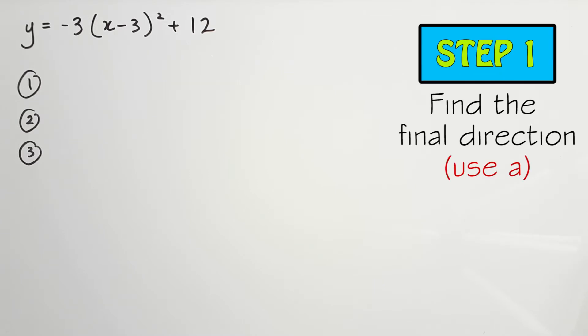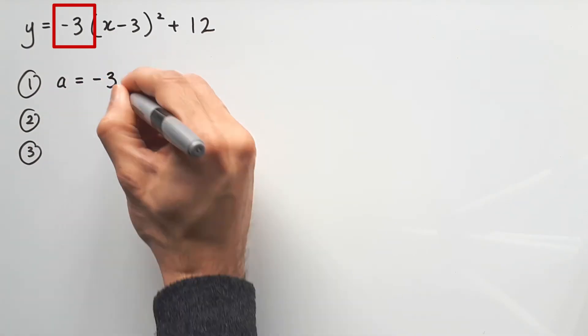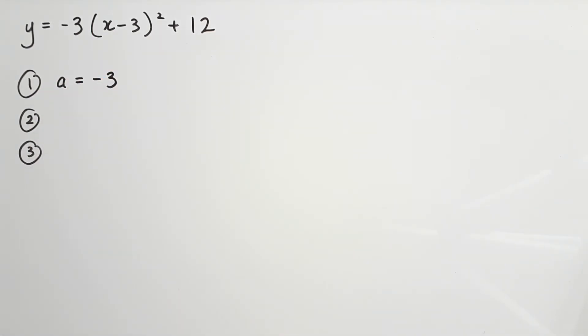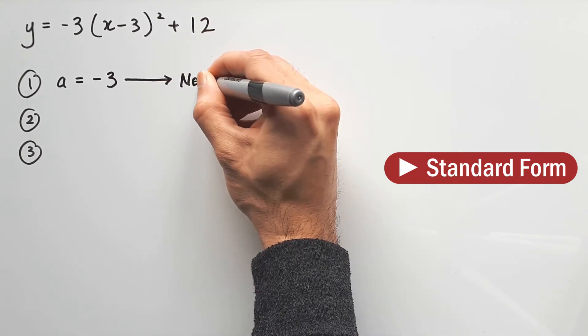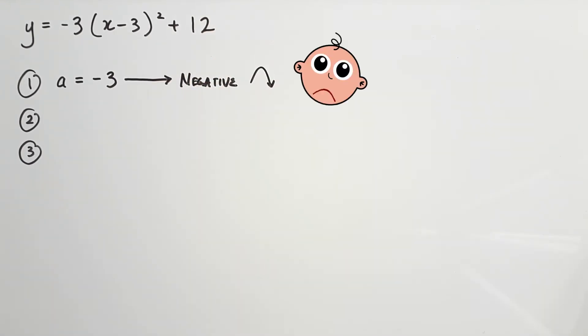So step 1, find out which way the parabola finishes using the a value. From the equation we can see a is negative 3. If you have watched my video on standard form parabolas, you'll know that negative a values make the curve finish downward, so the parabola will have a sad face.